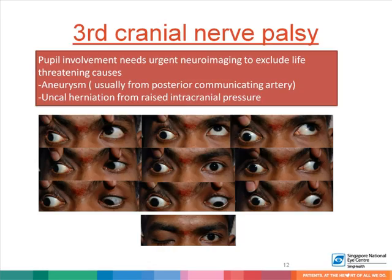This is an example of a patient with a third cranial nerve palsy, which, if the pupil is involved, needs urgent neuroimaging to exclude life-threatening causes. Most commonly, pupil involvement in a third nerve palsy must prompt investigation for an aneurysm, usually from the posterior communicating artery. In addition, uncal herniation from raised intracranial pressure can also cause a third cranial nerve palsy.